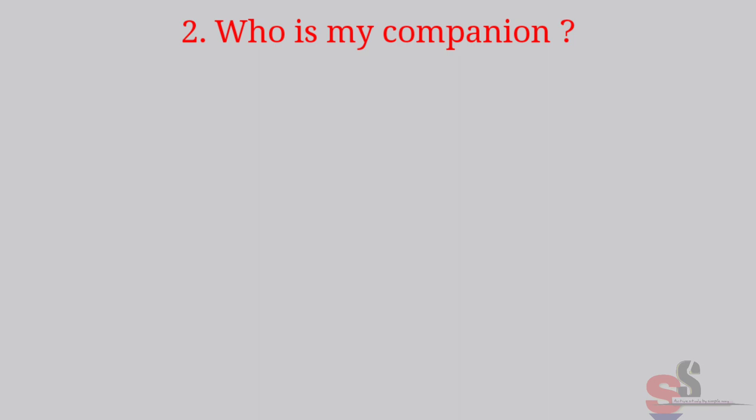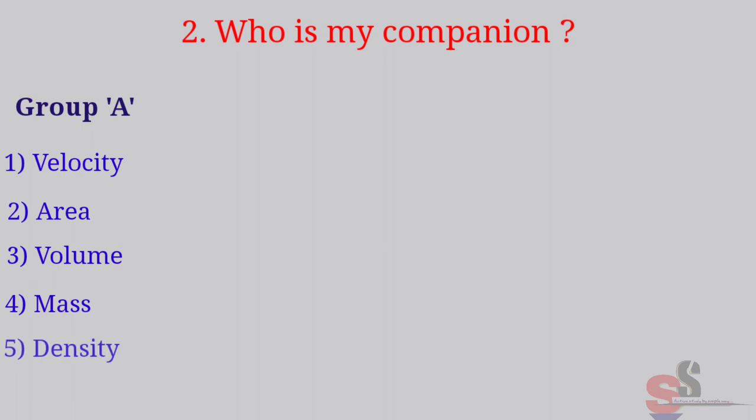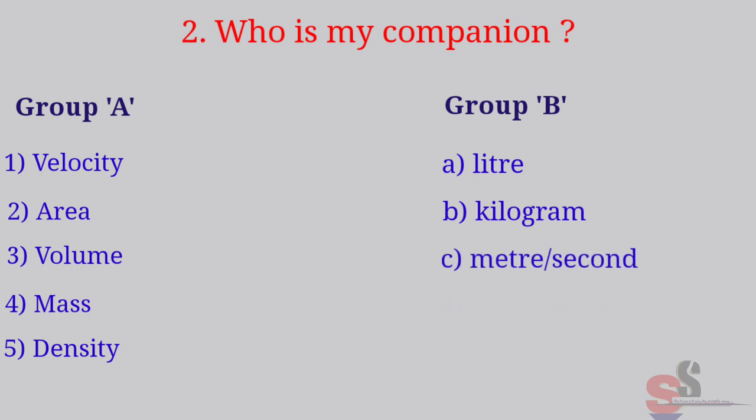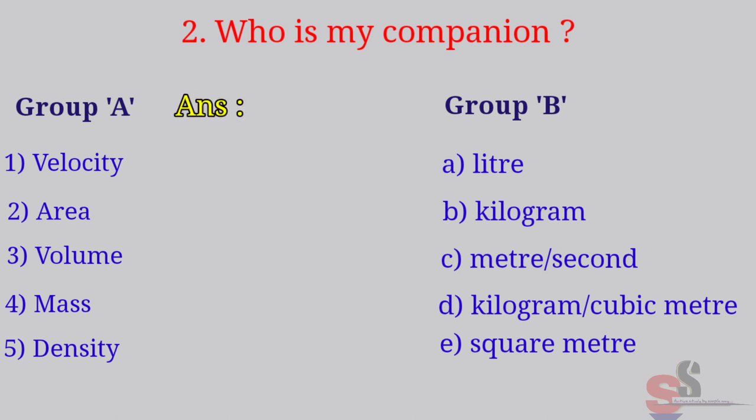Question 2: Who is my companion? Group A: First, velocity. Area. Volume. Mass. Density. Liter. Kilogram. Meter per second. Kilogram per cubic meter. Square meter.